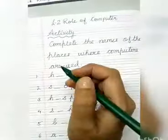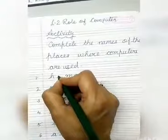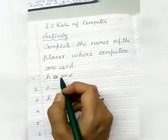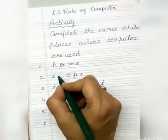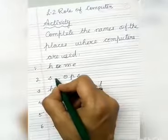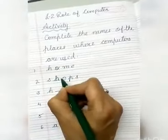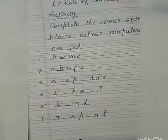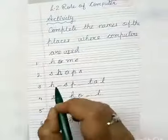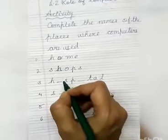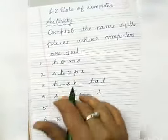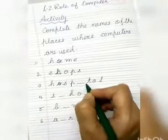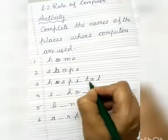The first one is H-O-M-E, home. Computers are used at home. The second one is S-H-O-P, shops. Computers are used in shops for making bills, making a list of items, typing them, and printing them.